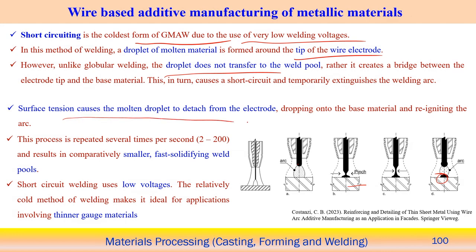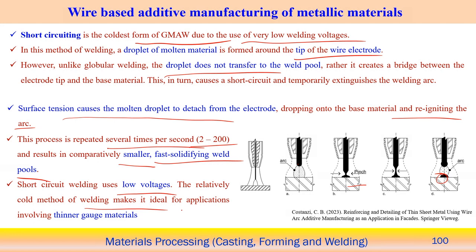Surface tension causes the molten droplet to discharge from the electrode and deposit onto the base metal, reigniting the arc. This cycle can occur 2 to 200 times per second, resulting in a very small droplet size and fast weld pool formation. Short circuit transfer, using low voltage and a relatively cold method, is ideal for thin gauge materials and can be utilized in additive manufacturing for more precise components.